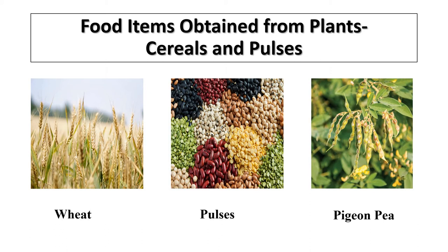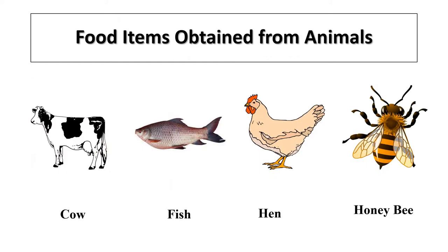And now, pulses. Pulses are second to cereals in our food. These are an important source of proteins. For example, peas, soya bean, beans, green gram, and so on.